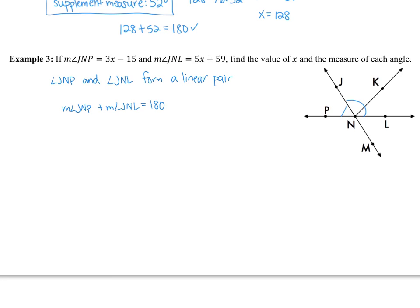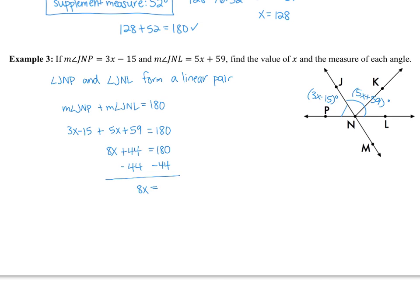We know the measure of angle JNP is 3x minus 15, and the measure of angle JNL is 5x plus 59. We don't need degrees throughout the algebra. Substitute those in and combine like terms: 3x and 5x give 8x, and 59 plus negative 15 gives 44, so 8x plus 44 equals 180. Subtract 44 from both sides: 8x equals 136. Divide by 8 and x equals 17.